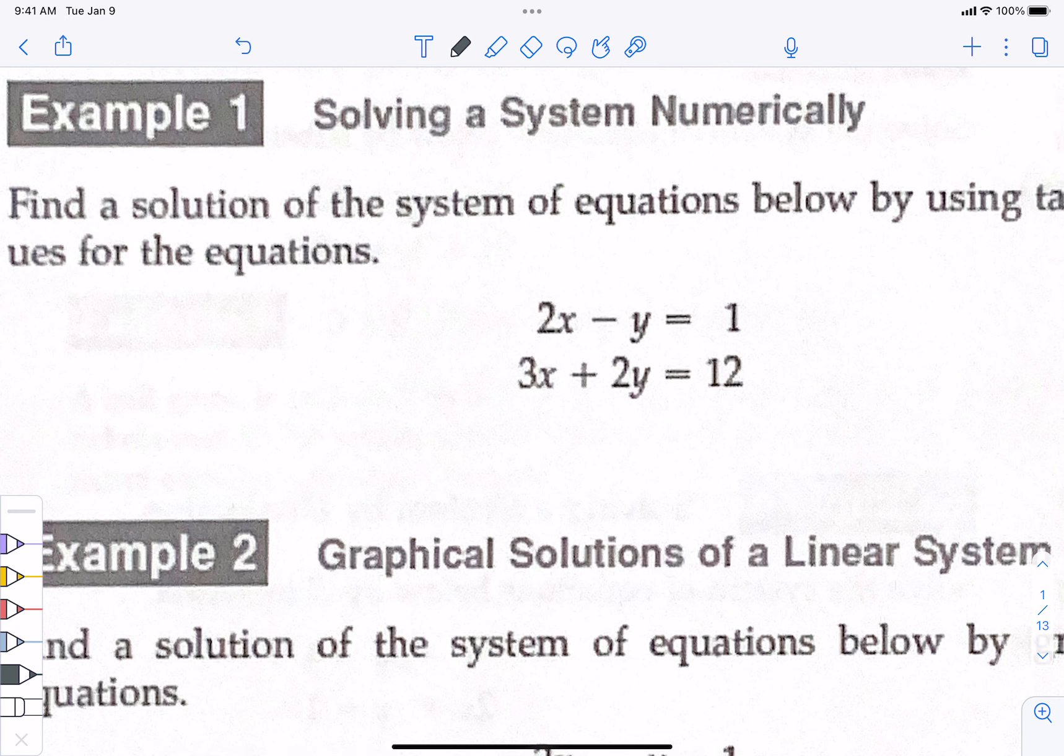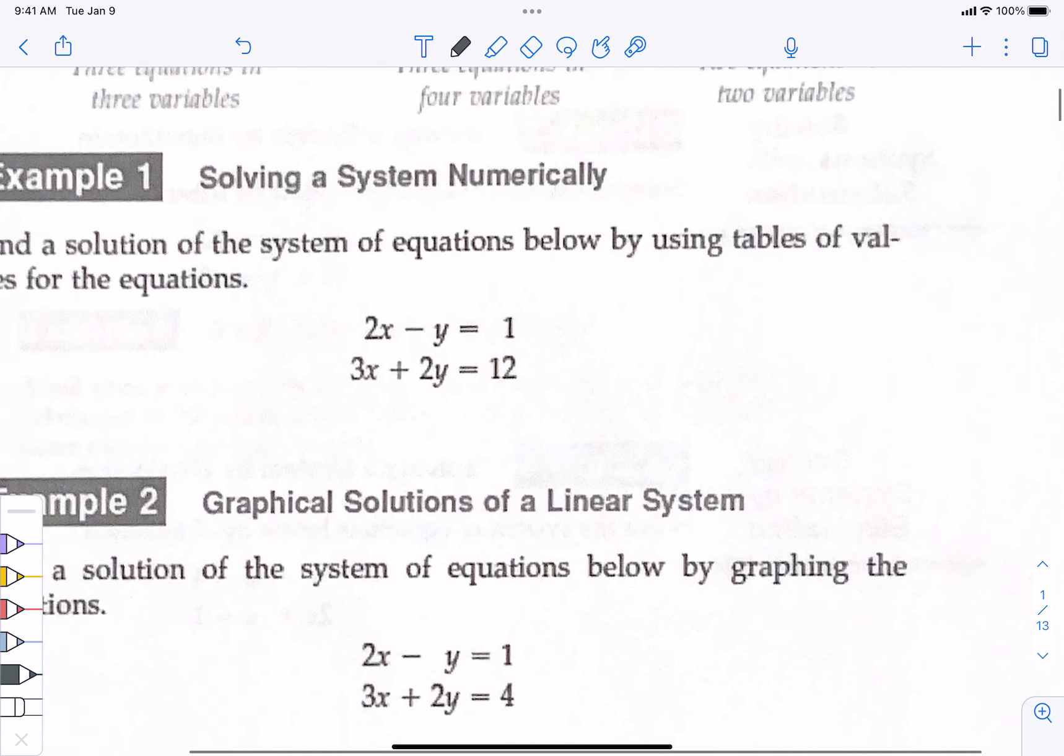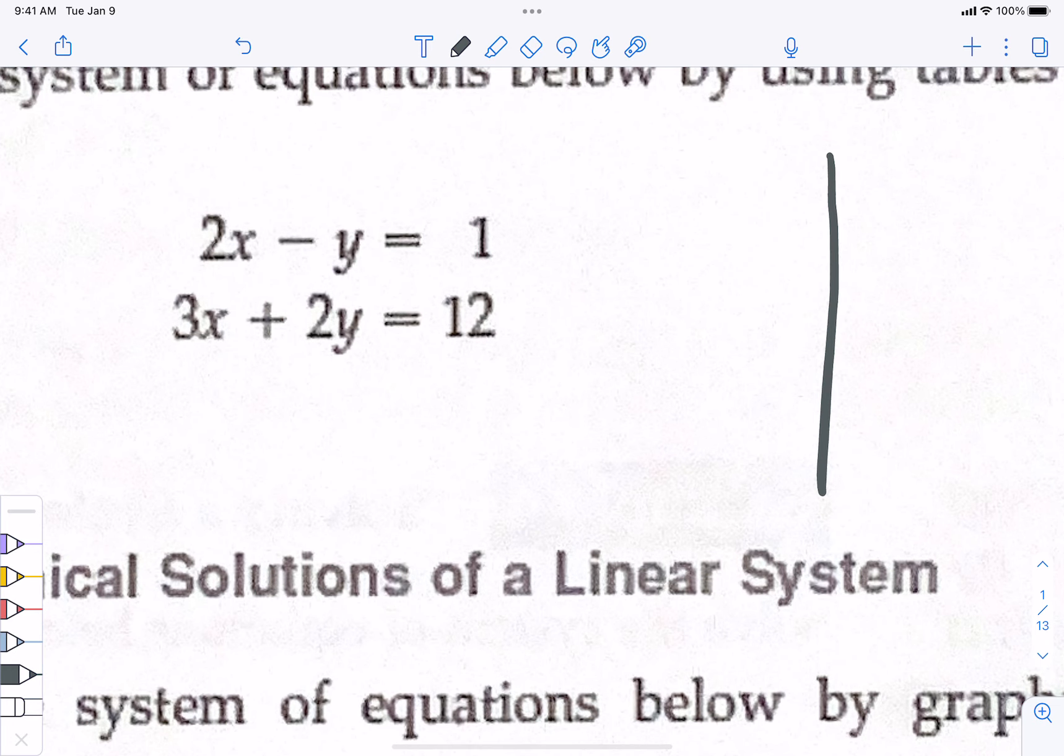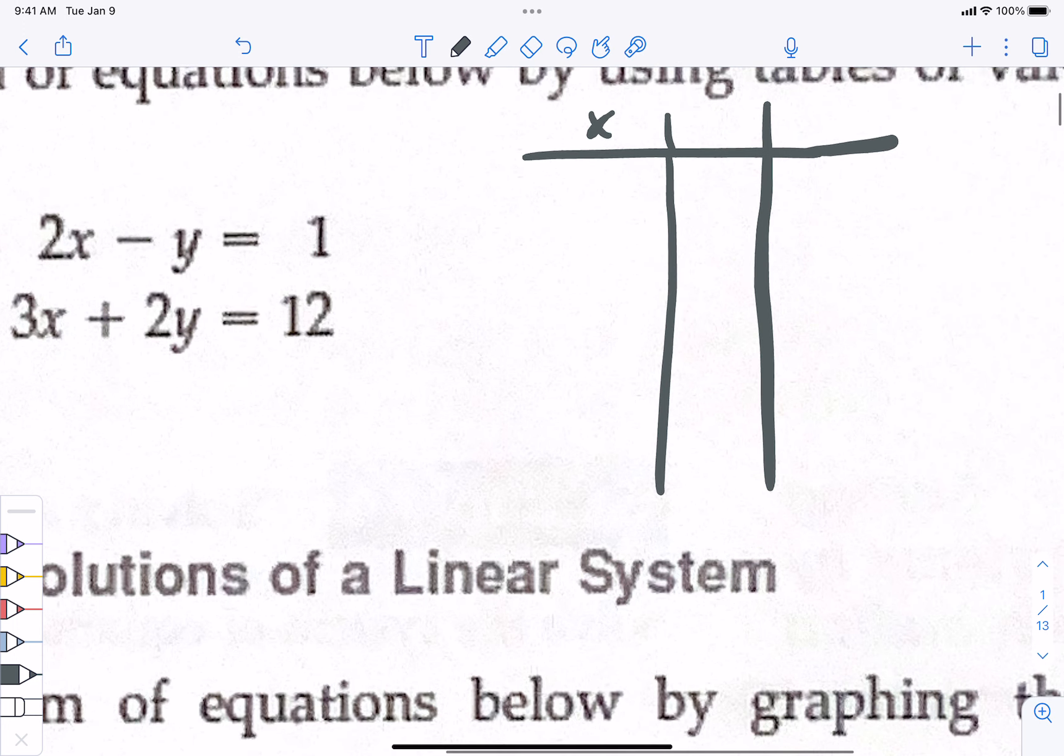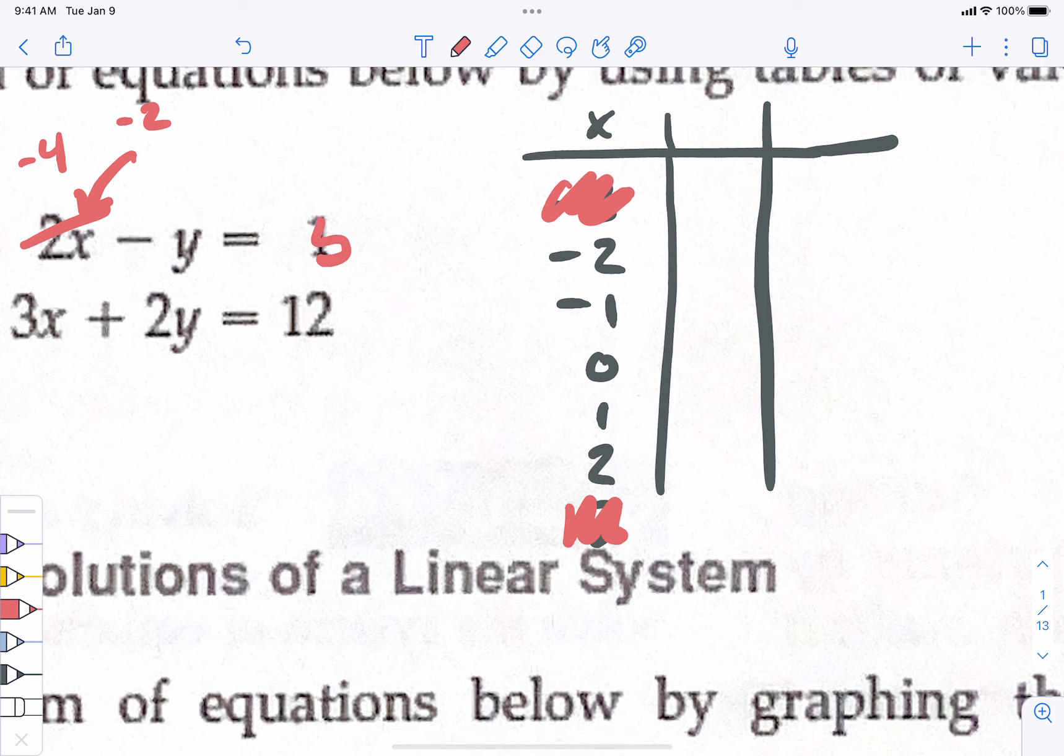Example one. Solving systems numerically. Find a solution of the system of equations below by using a table of values to plug stuff in. What would you like to pick? We're going to do x and then we're going to do y's, right? Let's choose negative 2, negative 1, 0, 1, 2. Let's do negative 2 to 2. If I plug negative 2 in for x right here into the first equation, this is going to be negative 4. Then you add the 4 over. So this would be 5. And negative y equals 5. So y equals negative 5. So you solve it.